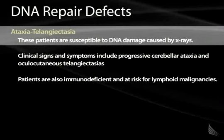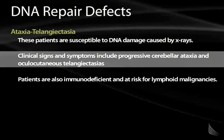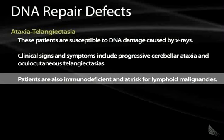Ataxia telangiectasia is a disease in which patients are susceptible to DNA damage caused by x-rays. Clinical signs include progressive cerebellar ataxia and oculocutaneous telangiectasia found on the eyes and skin. These patients are also immunodeficient and at risk for developing lymphoid malignancies, all resulting from an inability to repair x-ray-induced DNA damage.